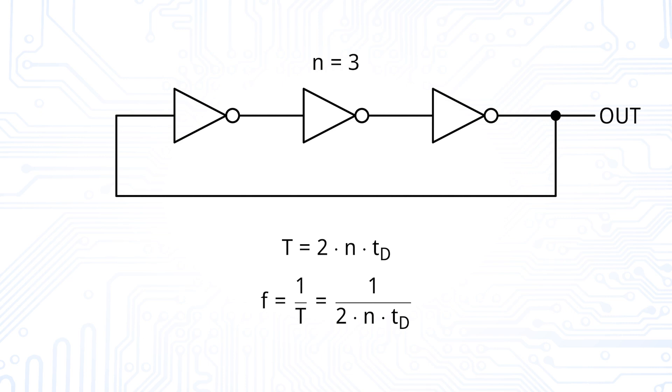Remembering that each inverter has a propagation delay time, and assuming that the delay time of every inverter is the same, we can therefore calculate the period of our signal and therefore also our frequency.